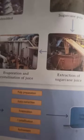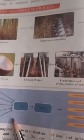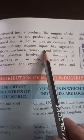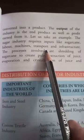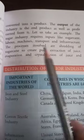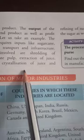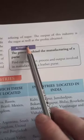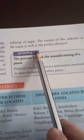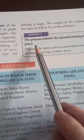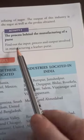Let us take an example: the sugar industry. The sugar industry requires inputs like sugarcane, labor, machines, transport, and infrastructure. The processes involve shredding of sugarcane to create pulp, extraction of juice, evaporation and crystallization of juice, and refining of sugar. The output of this industry is the sugar as well as the profits obtained.